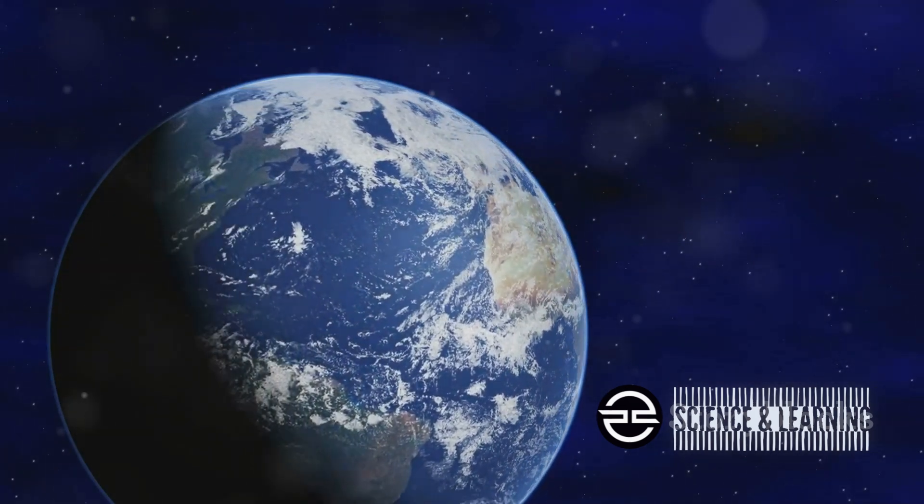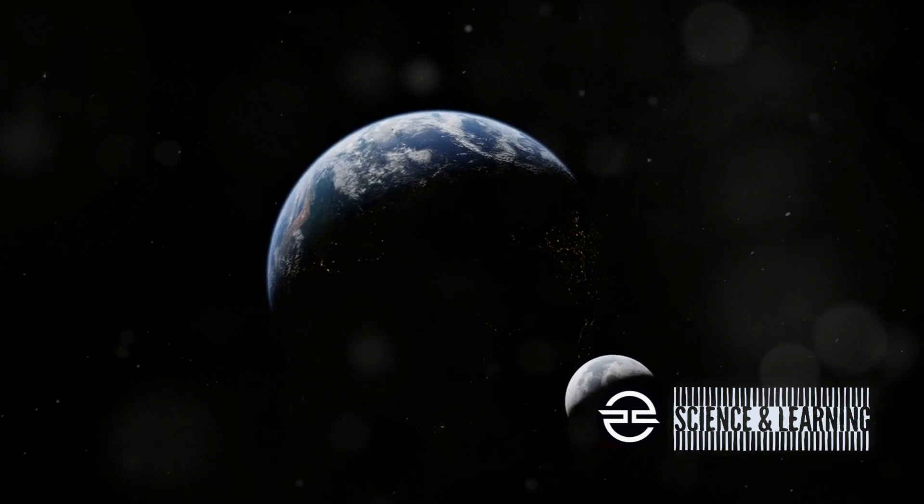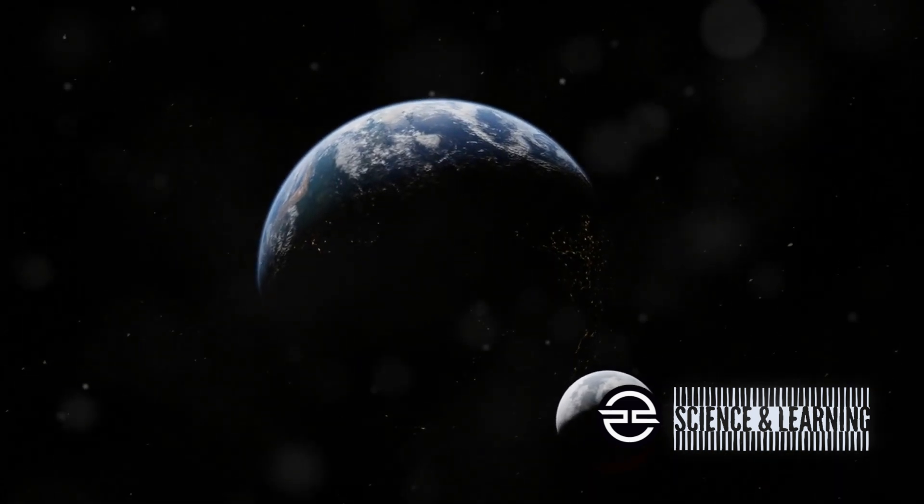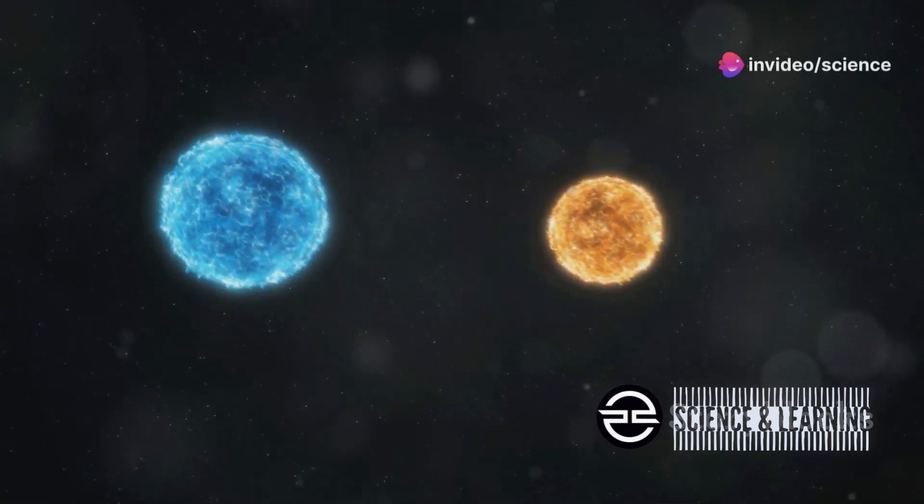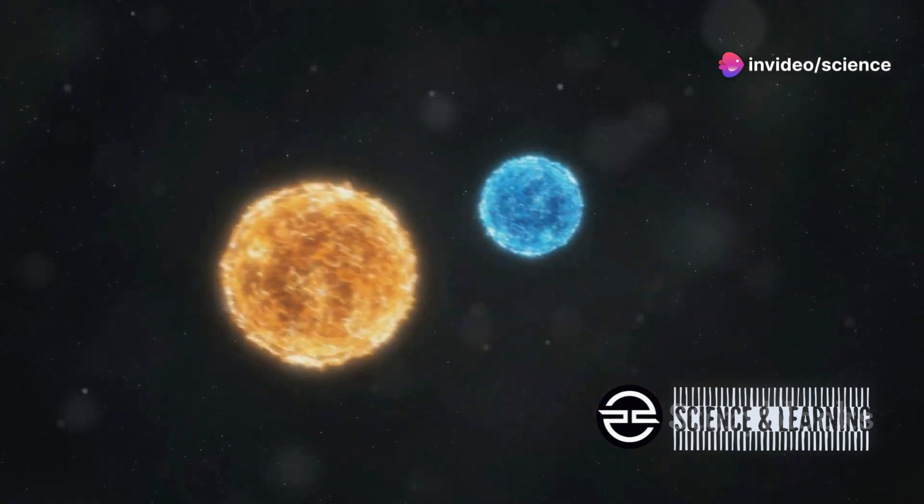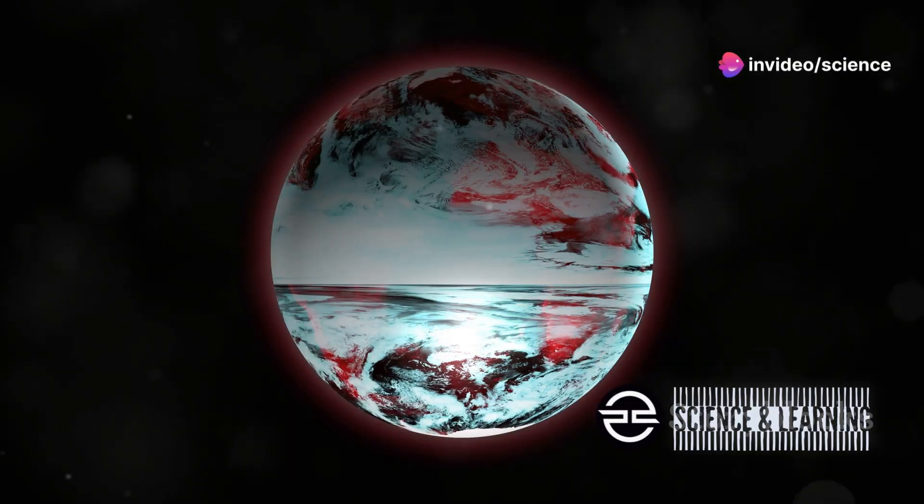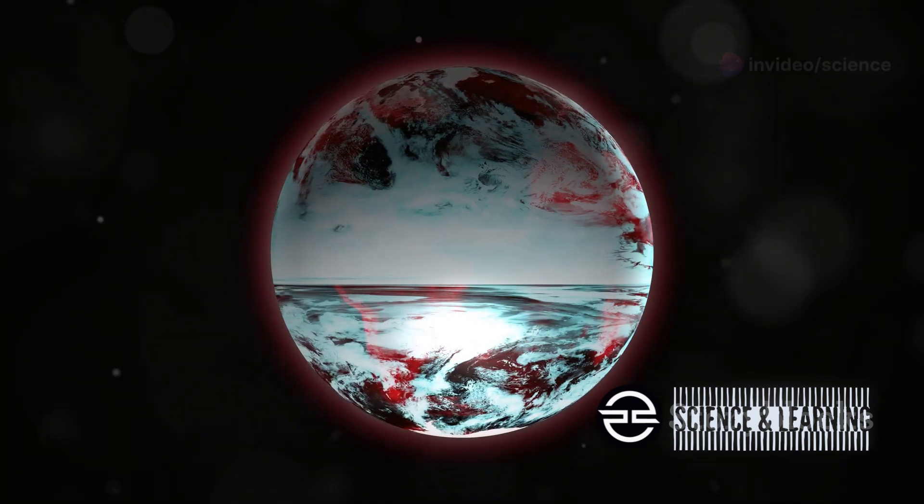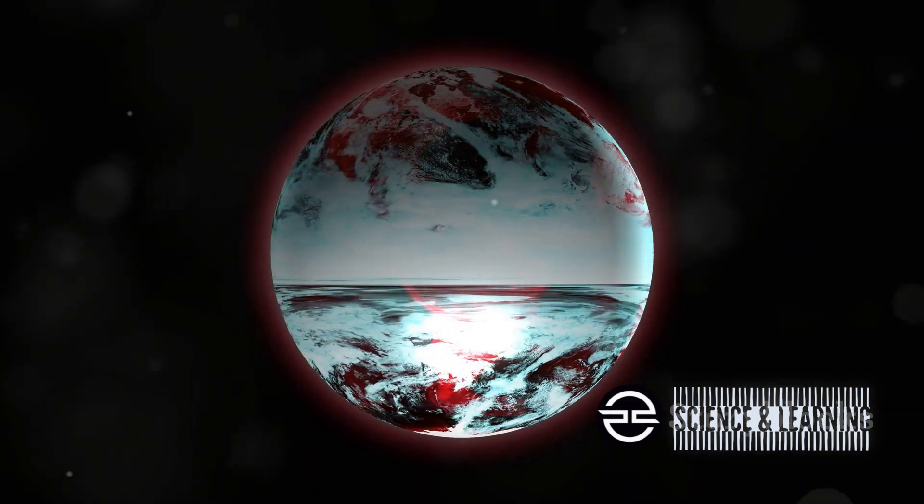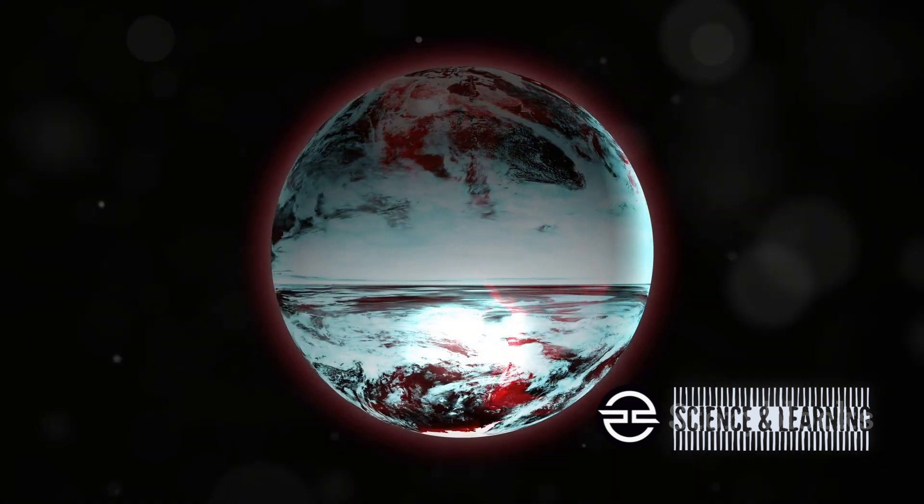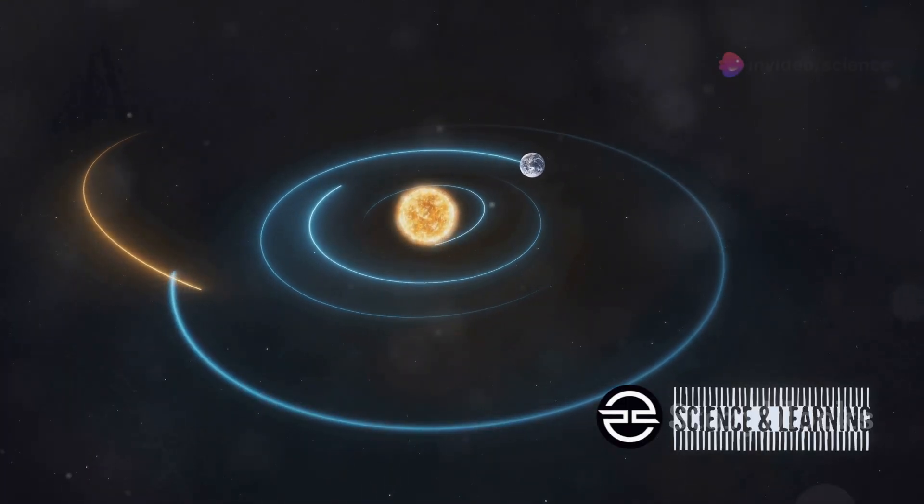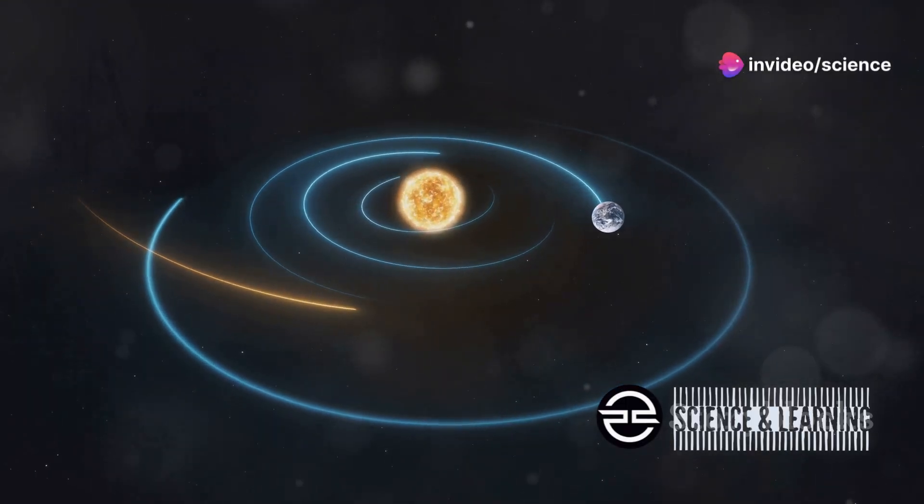Earth and Venus, despite their differences, share a similar size and composition. They're like siblings with distinct personalities shaped by their unique journeys around the Sun. Earth, the vibrant and life-filled sibling, stands in stark contrast to Venus, the hot and unforgiving one.